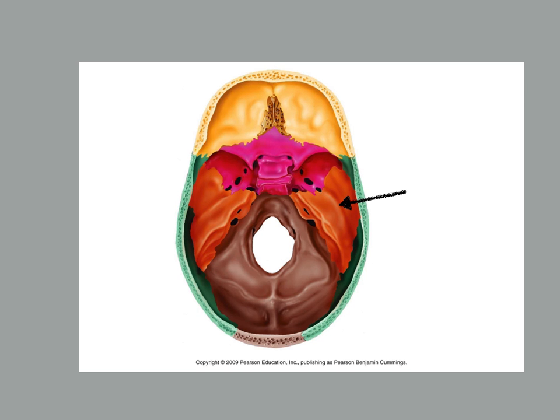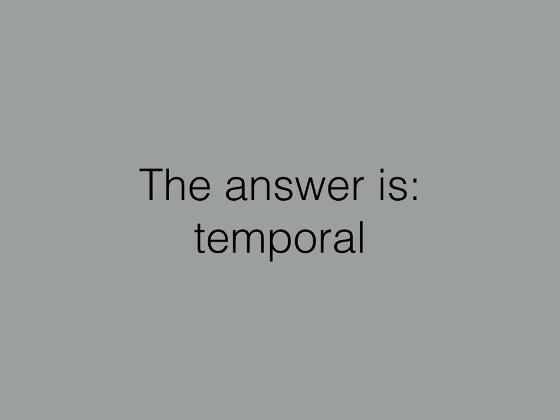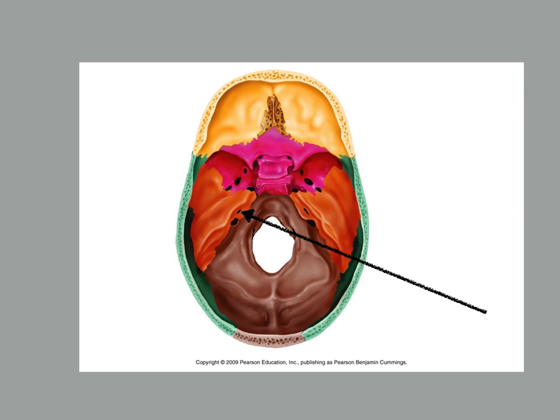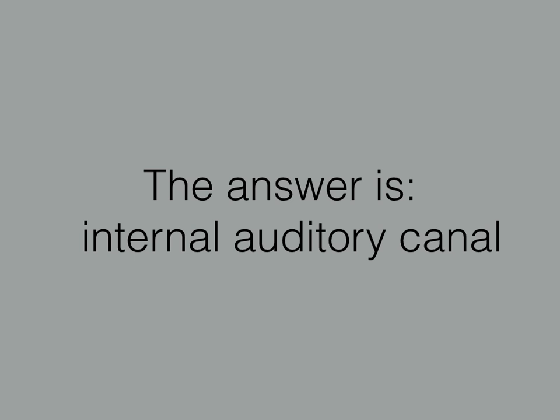Again, the name of this bone. That is the temporal bone. And again, this time we want the opening there in the temporal bone — that smaller one. This is the internal auditory canal. And again, you can use acoustic or the word meatus for canal.